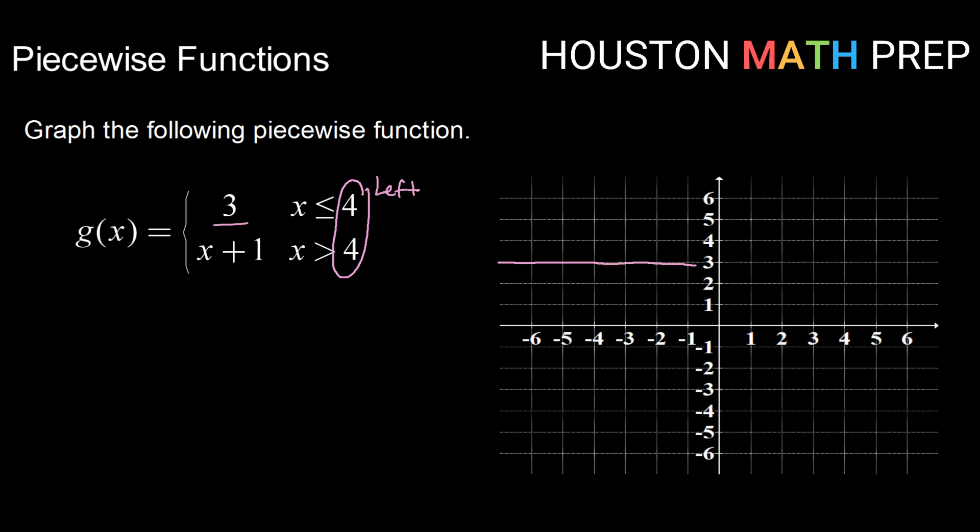So I'm going to go ahead and graph a horizontal line at three, and I'm going to stop when I get to x equals four. There we go. It extends forever to the left. But at four I need to put some sort of dot there, either open or closed.